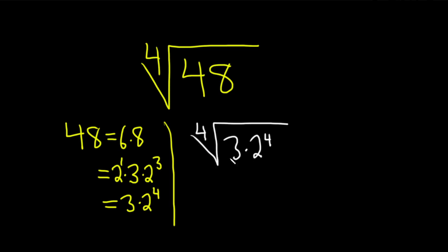And now we can take the fourth root of each factor. So this is the fourth root of 3 times the fourth root of 2 to the 4. And what basically happens is whenever this exponent matches this order or index, it cancels.